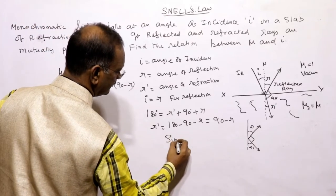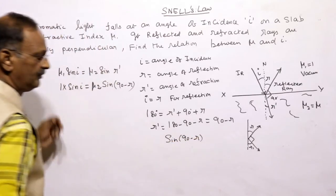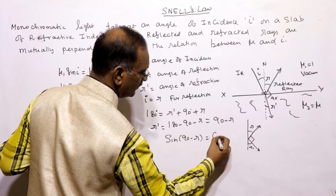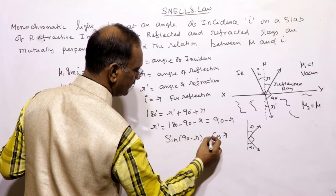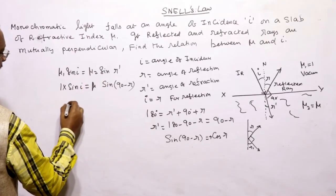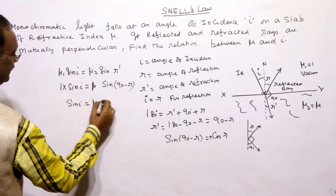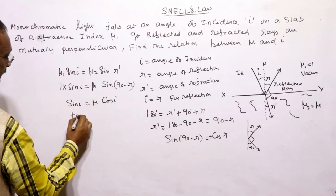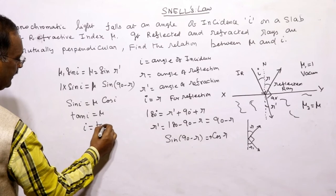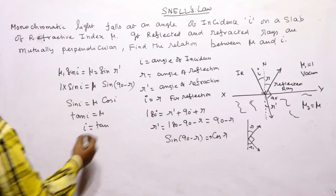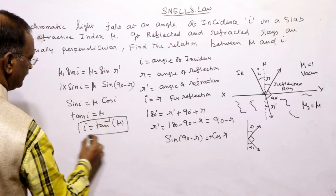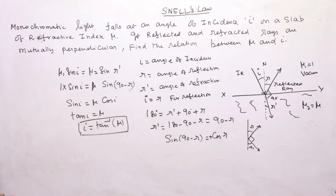Since r' = 90° − r, we use the identity sin(90° − r) = cos(r). So sin(i) = mu × cos(i), because i = r by law of reflection. This simplifies to sin(i)/cos(i) = mu, giving tan(i) = mu. Therefore, the angle of incidence is i = tan⁻¹(mu), i.e., the angle of incidence equals the inverse tangent of the refractive index of the second medium.